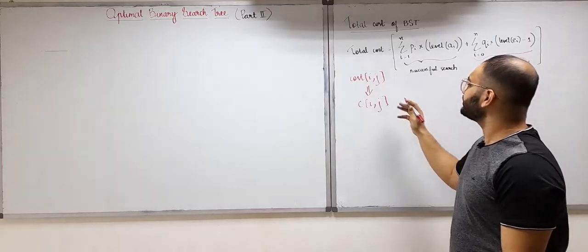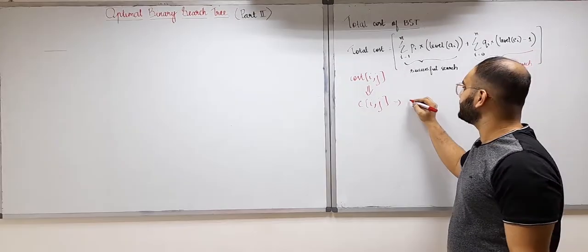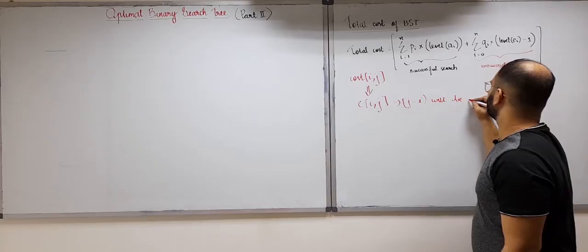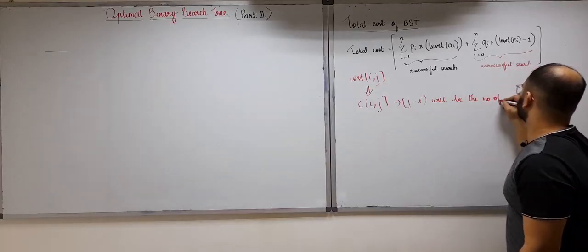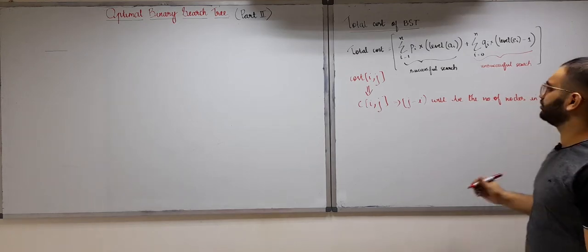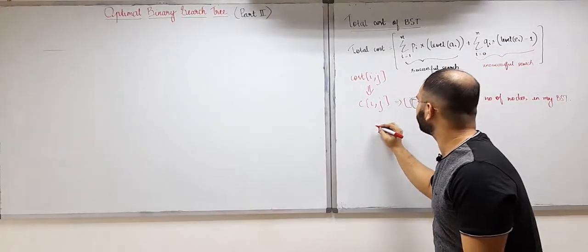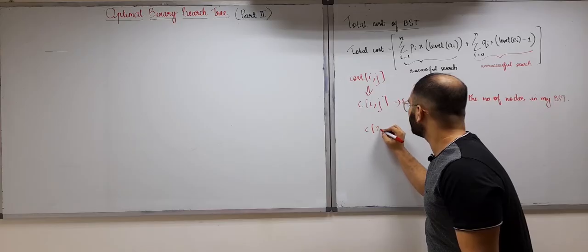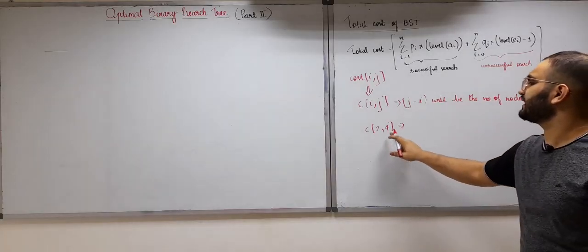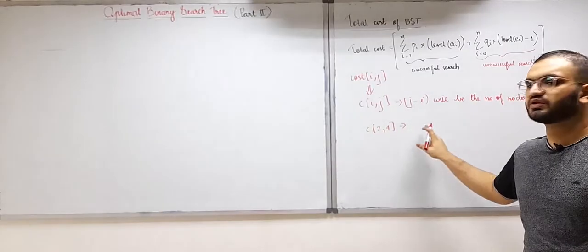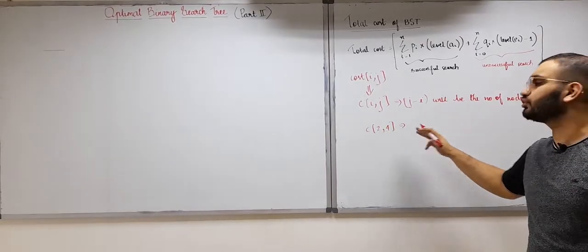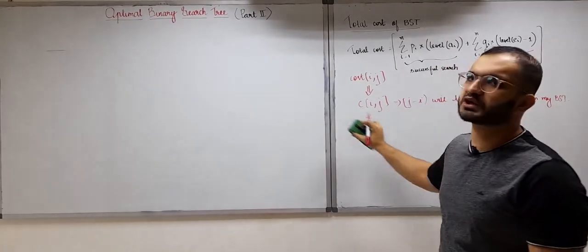So what is i and j here? Basically, every time j minus i will be the number of nodes in the BST — in my binary search tree. This will always hold true. Whenever I write c of i comma j, for example c of 2 comma 4, you can automatically say there are two nodes in this tree because j minus i equals 2, meaning 4 minus 2 equals 2. So there are two nodes in this tree for which we are calculating the cost c(2,4). This is the terminology we are going to use in this video.